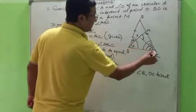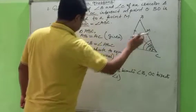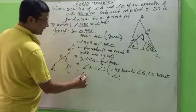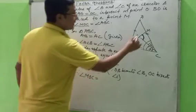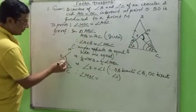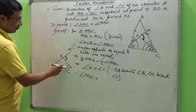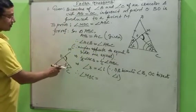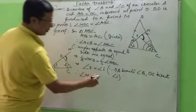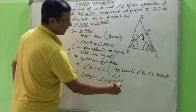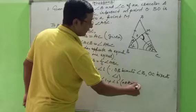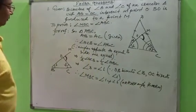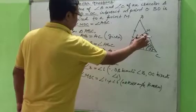In triangle OBC, the side BO is produced to M. Therefore angle MOC is an exterior angle. Exterior angle equals the sum of the two interior opposite angles. Here angle 1 and angle 3 are those angles. So angle 1 plus angle 3 equals angle MOC. This is by the exterior angle theorem.